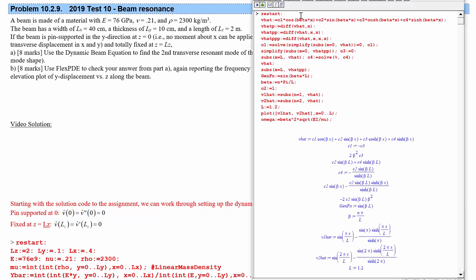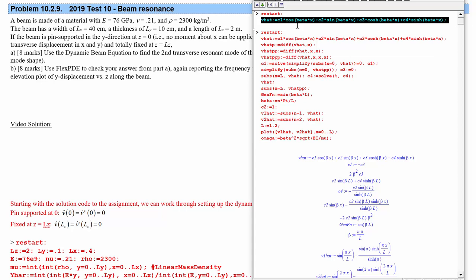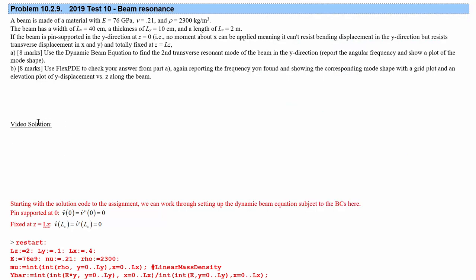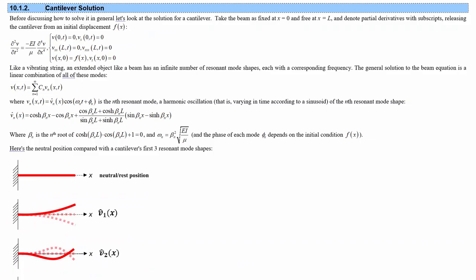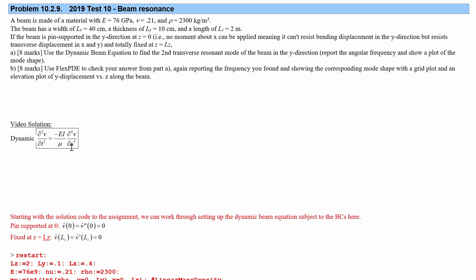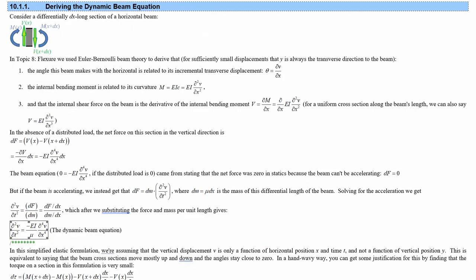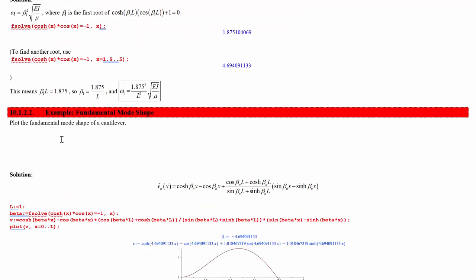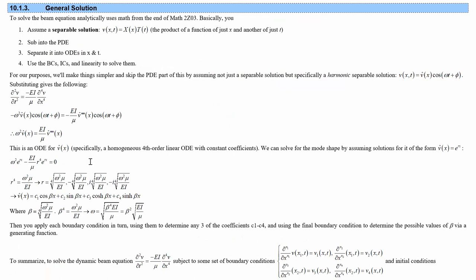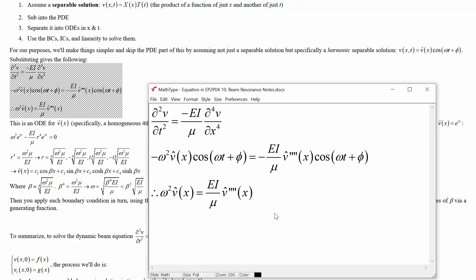The process for doing this in Maple is going to be similar to before. We start with our solution to the dynamic beam equation, as given in the notes. We have the dynamic beam equation, and we substitute the assumed form — a harmonic solution — which leads to an ordinary differential equation on V hat.